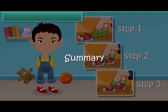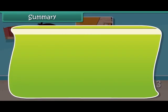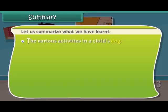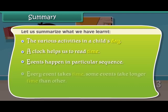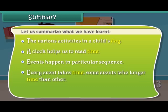Summary. Let us summarize what we have learned: the various activities in a child's day, a clock helps us to read time, events happen in a particular sequence, every event takes time, and some events take longer time than others.